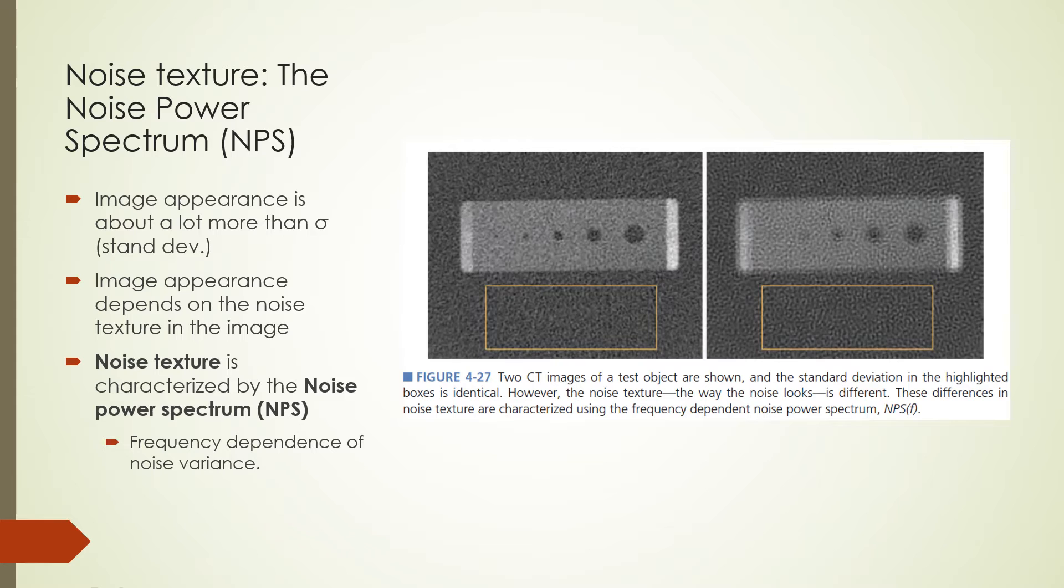We can understand the differences in noise appearance by using the noise variance, which is just the squared standard deviation. The frequency dependence of the noise variance is characterized by the noise power spectrum. Noise power spectrum of a system describes how well the system processes noise in an image. Noise power spectrum is important in CT, where different reconstruction kernels are used because each kernel either removes or preserves different frequencies of noise. So images can look different even if the noise magnitude is the same.